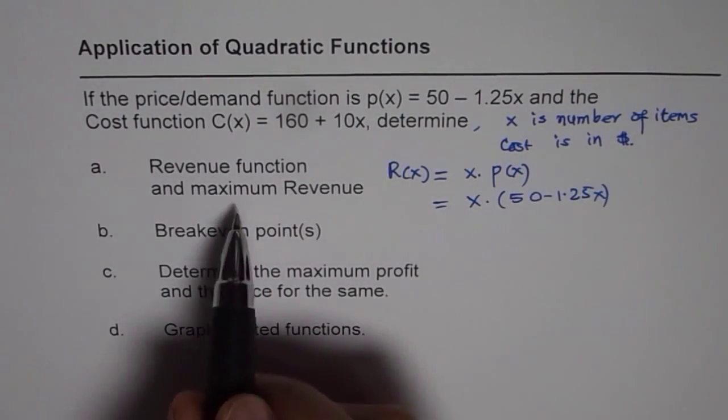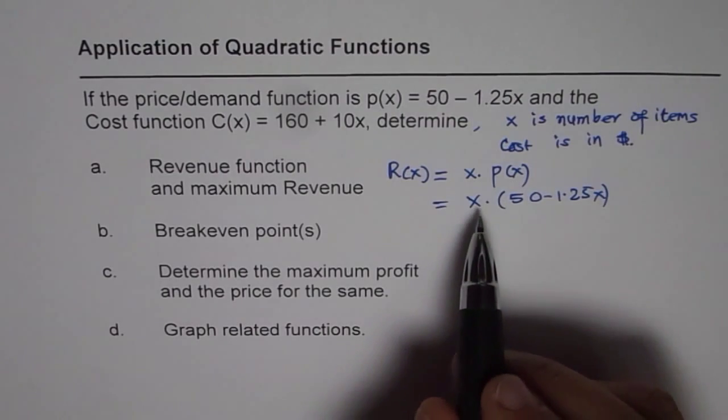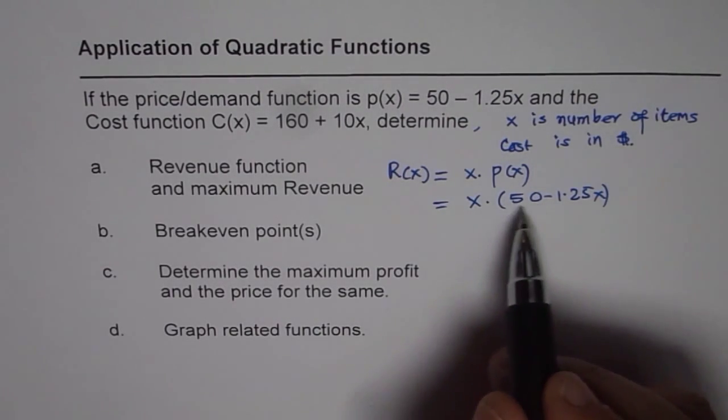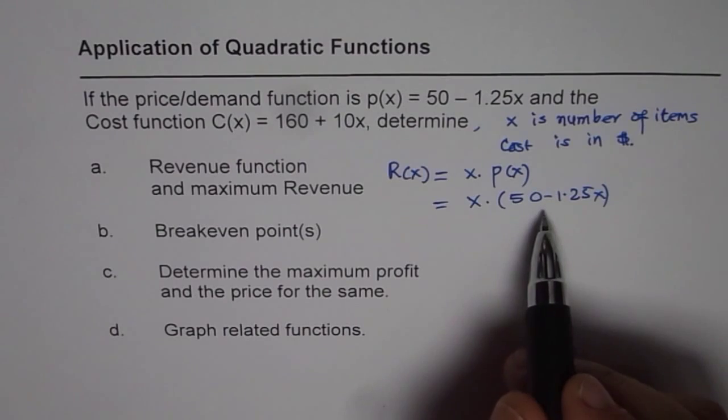You can use completing the squares, or you could—these are in factored form so you can find axis of symmetry and then do it.